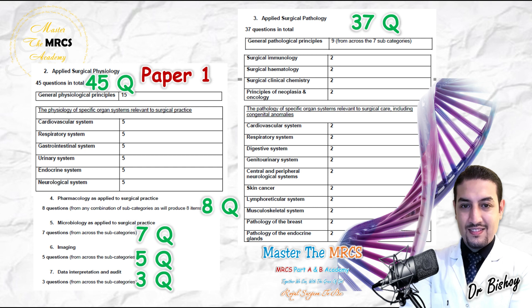The respiratory system will include ABG questions; the renal system will cover the buffering system and ABG as well. The neurological system will have about three questions out of the five on the Glasgow Coma Scale. So for the 45 physiology questions, you can master them by knowing the most commonly tested topics. Electrolyte imbalance appears within urology, and the endocrine system questions align with your surgical endocrine knowledge — so don't create your own monster.